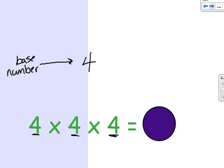Then we're going to write how many times we see this number. So it's one, two, three. It's four times four times four. That's three different times. So the exponent is going to be a three. So let's label that part. Exponent.